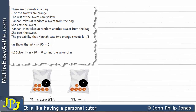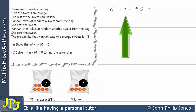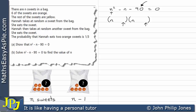Let's do part B, which says solve N squared minus N minus 90 equals zero to find the value of N. Writing the equation: N squared minus N minus 90 equals zero. We're going to put this into brackets — N times N to give N squared. To get minus 90, I'll try 9 and 10. And to get minus N in the middle, I'll use a plus and a minus sign.